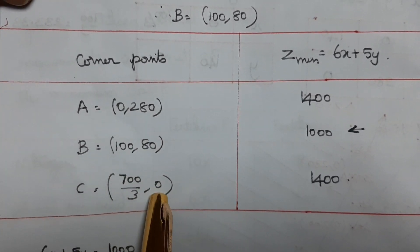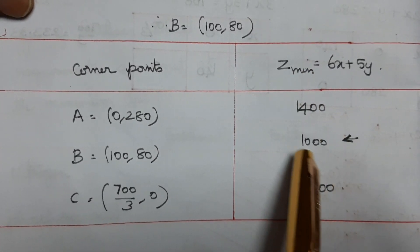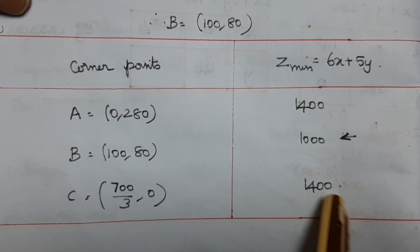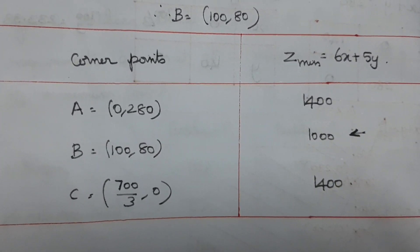For the objective function Z minimum at point B is 1000. Since this is an unbounded area, we need to verify.